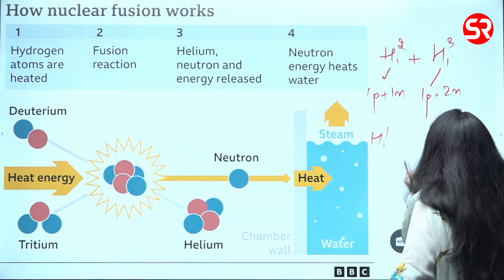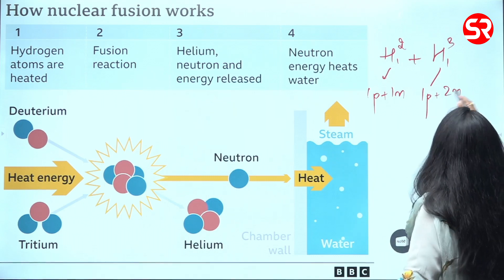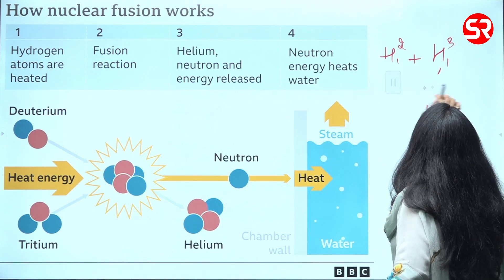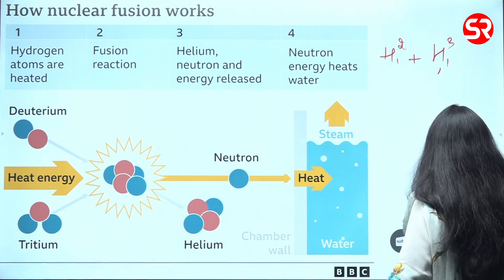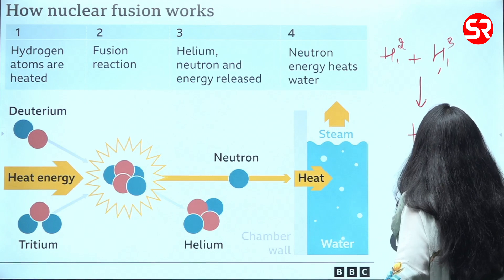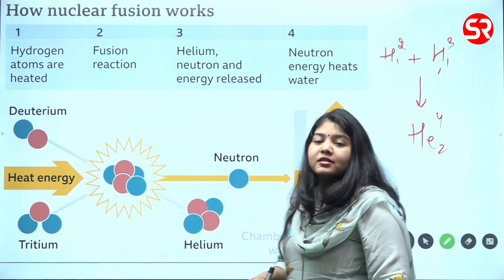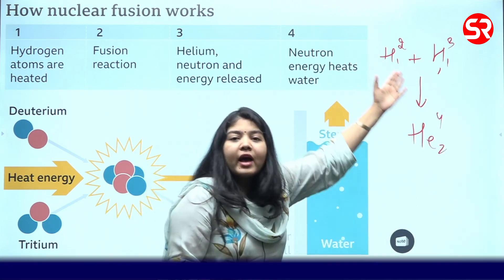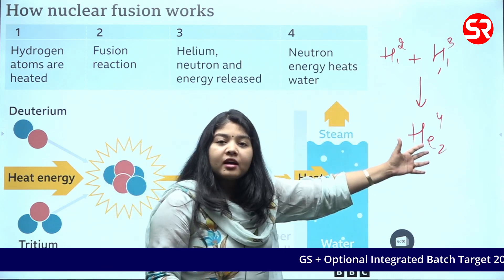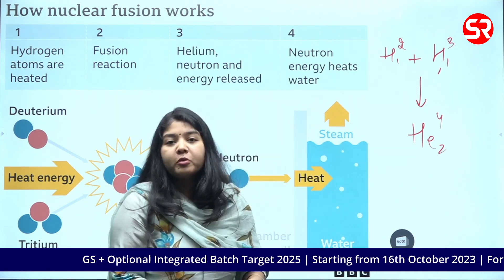These isotopes are combined to create a bigger element, and here the bigger element is the inert gas helium. Helium is an inert gas or a noble gas. This is what happens in nuclear fusion, this is what happens in the sun, this is what happens in stars, which produces a huge amount of energy.